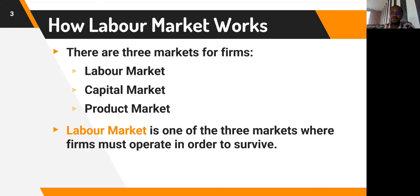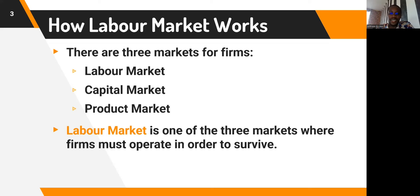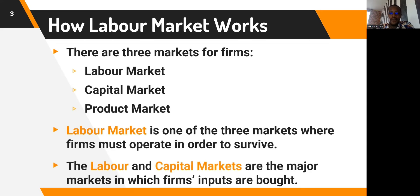In the capital market, this is where capital — such as machinery, factories, warehouses, and anything considered equipment — is traded. The product market is where products or goods and services are sold. The labor market and the capital markets are the major markets in which firms' inputs are actually bought.